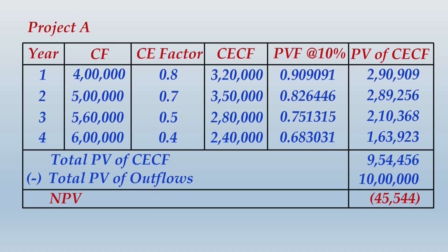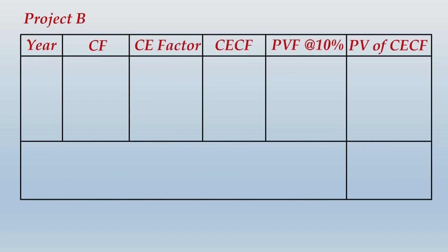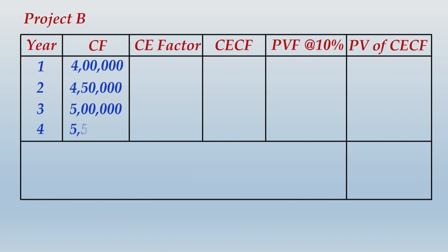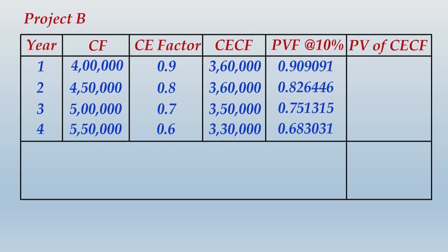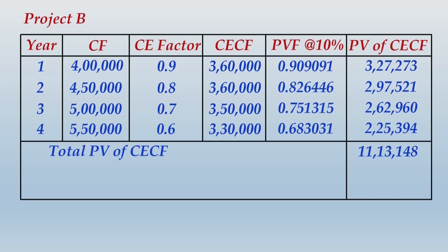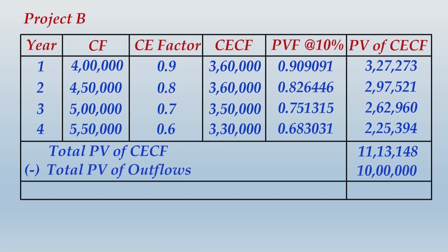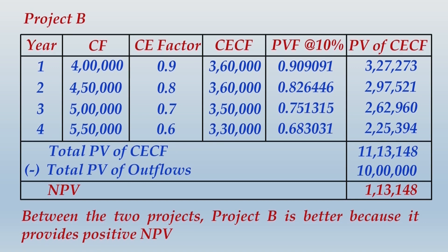For Project B, the same presentation is made. If your calculations are correct, the total PV of CECF comes to ₹11,13,148. Subtracting the outflow of ₹10 lakhs gives a positive NPV. Therefore, between the two projects, based on the certainty equivalent technique, Project B is better as it provides a positive NPV while Project A gives a negative NPV.